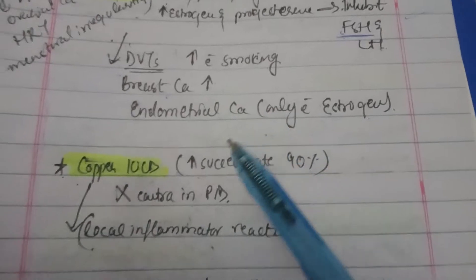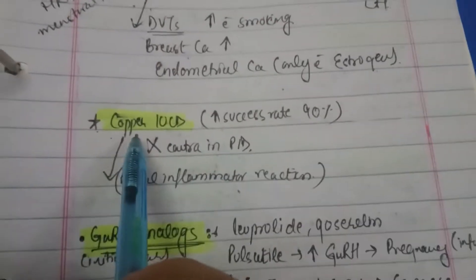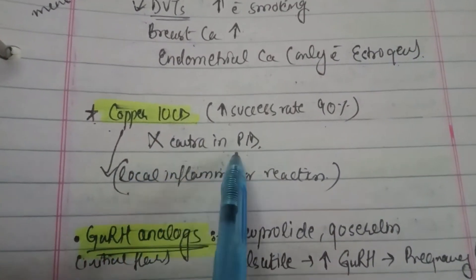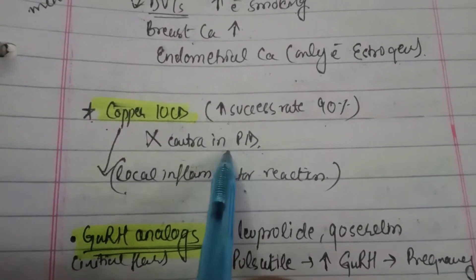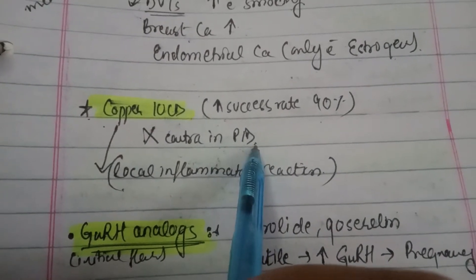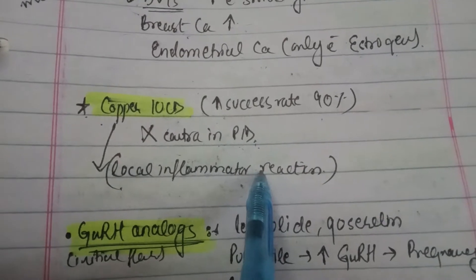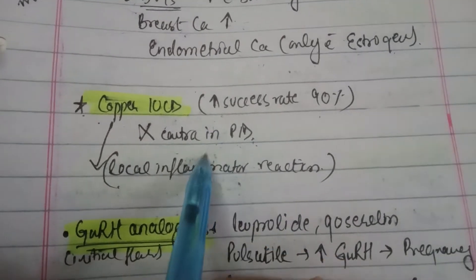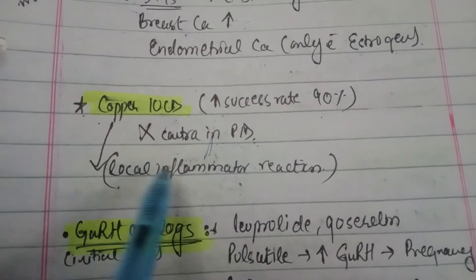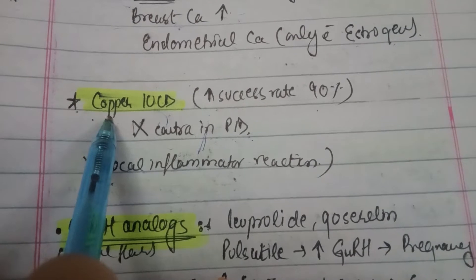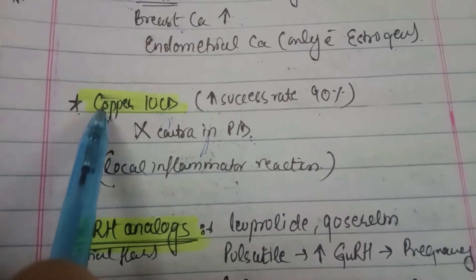Copper IUCD has a success rate of 99%. It is contraindicated in pelvic inflammatory disease, as it may impede healing. It causes a local inflammatory reaction, which explains the contraindication, and makes the environment unlikely for both fertilization and implantation.